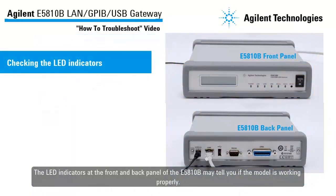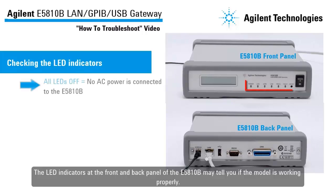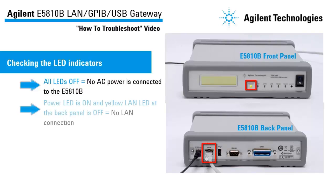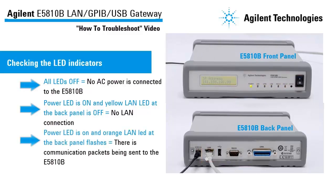The LED indicators at the front and back panel of the E5810B may tell you if the model is working properly. All LEDs off indicates that no AC power is connected to the E5810B. If the power LED is on and the yellow LAN LED at the back panel is off, it indicates there is no LAN connection. If the power LED is on and the orange LAN LED at the back panel flashes, it indicates that communication packets are being sent to the E5810B.